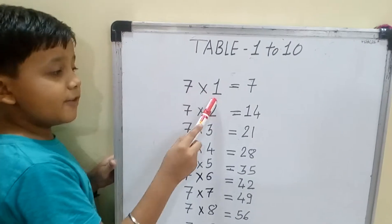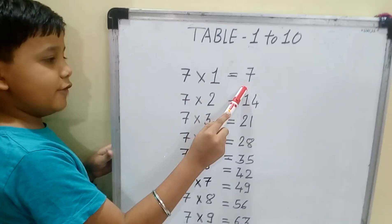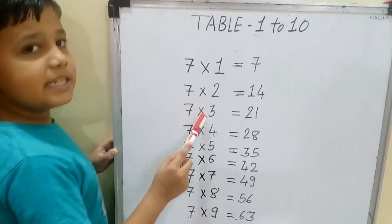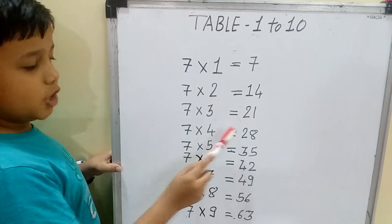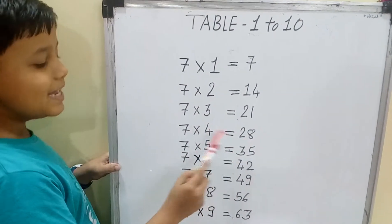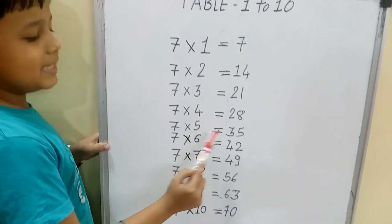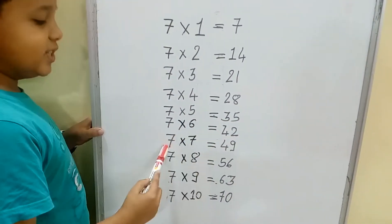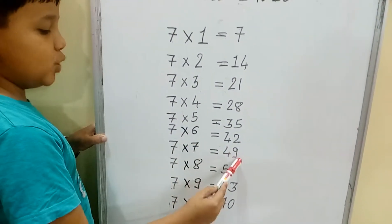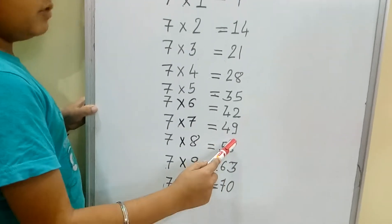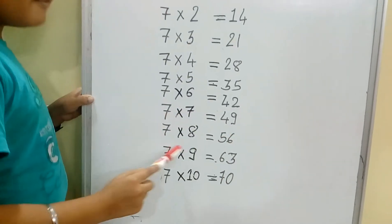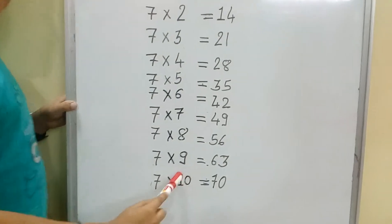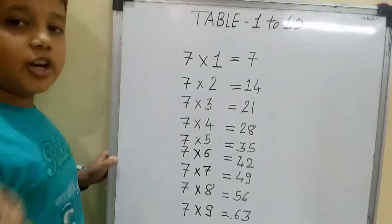In the table of 7. 7 one is 7, 7 two is 14, 7 three is 21, 7 four is 28, 7 five is 35, 7 six is 42, 7 seven is 49, 7 eight is 56, 7 nine is 63, 7 ten is 70.